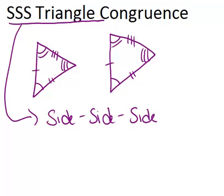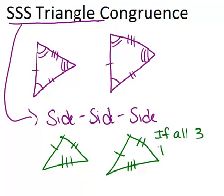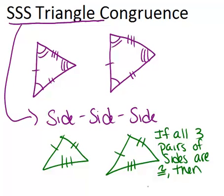What it means is that if you have two triangles, and all you know about them is that all three pairs of sides are congruent, that's actually enough information to show that the triangles themselves must be congruent, even though you don't know anything about the angles. So, if all three pairs of sides are congruent, then the triangles are congruent.